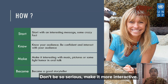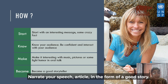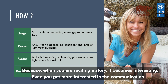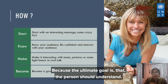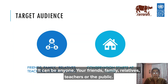Make it more interactive — ask questions with your audience, check how they are feeling, and address any doubts. Narrate your speech or article in the form of a good story. Because if you are reciting a story, it becomes really interesting — you're also more engaged in communicating, and the person listening will understand more. The ultimate goal is that the person understands. Your target audience can be anyone: friends, family, relatives, teachers, or the public.